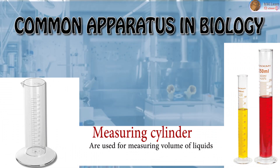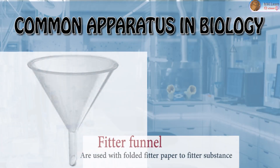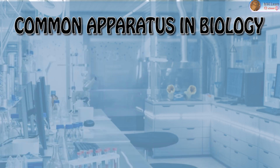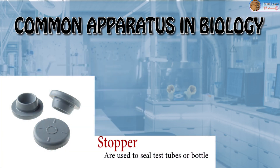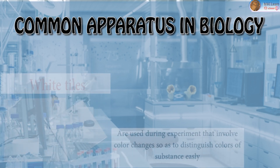Measuring cylinder: for measuring volume of liquids. Filter funnel: used with folded filter paper to filter substances. Stoppers or cork stoppers: used to seal test tubes or bottles. White tile: used during experiments that involve color changes so as to distinguish colors of substances easily.